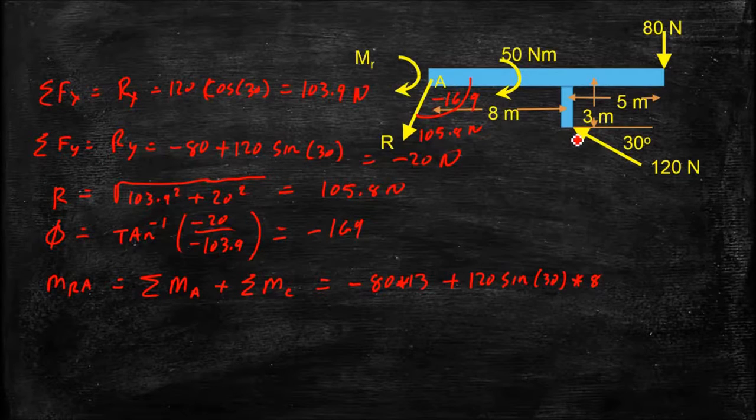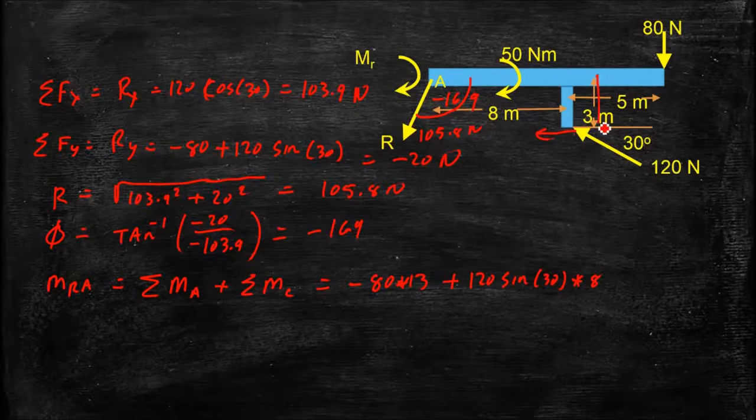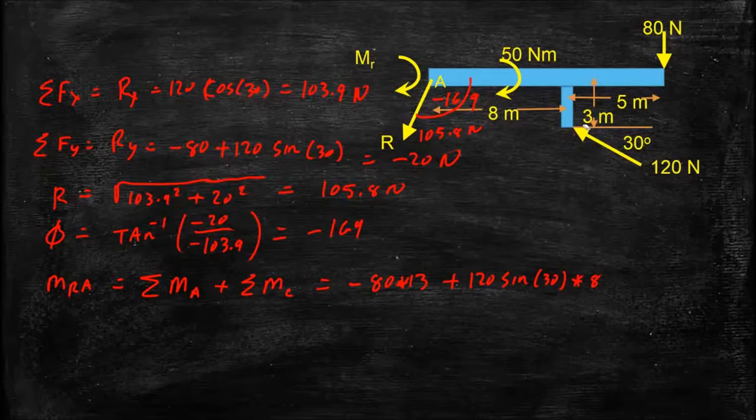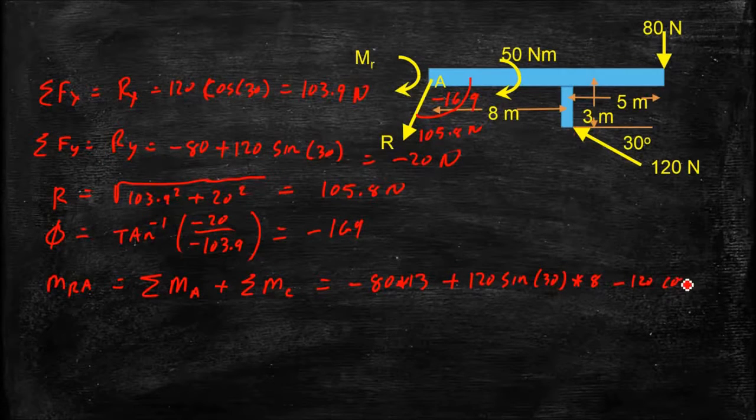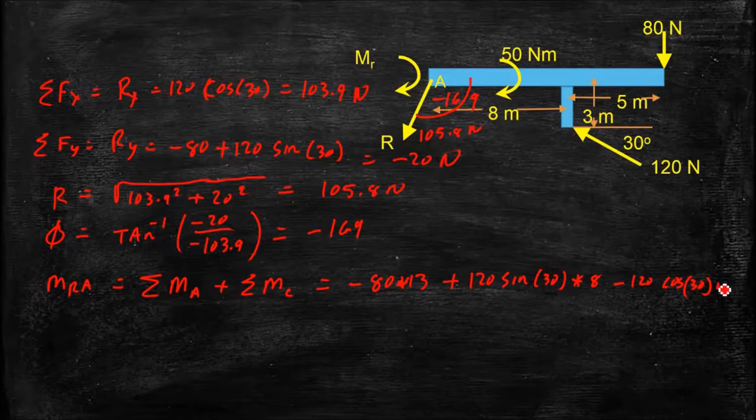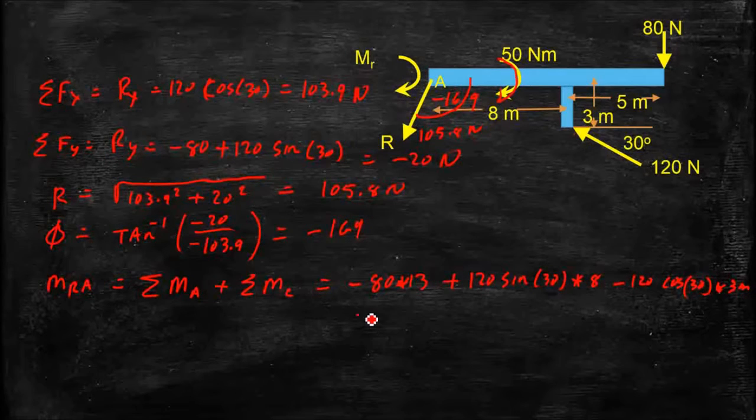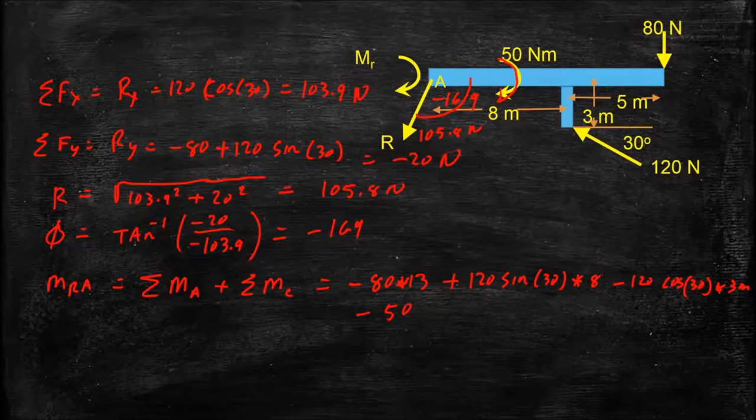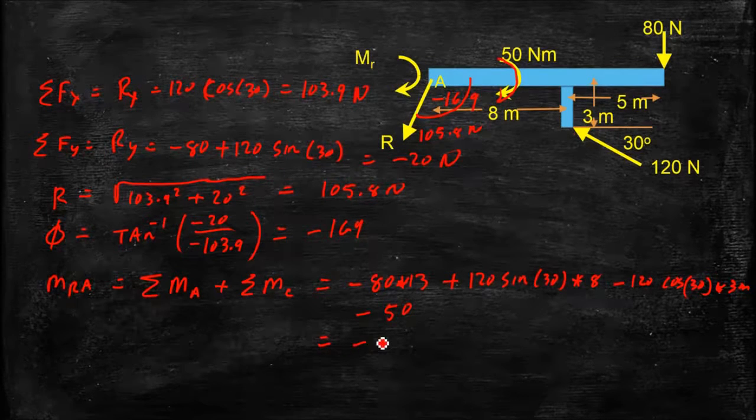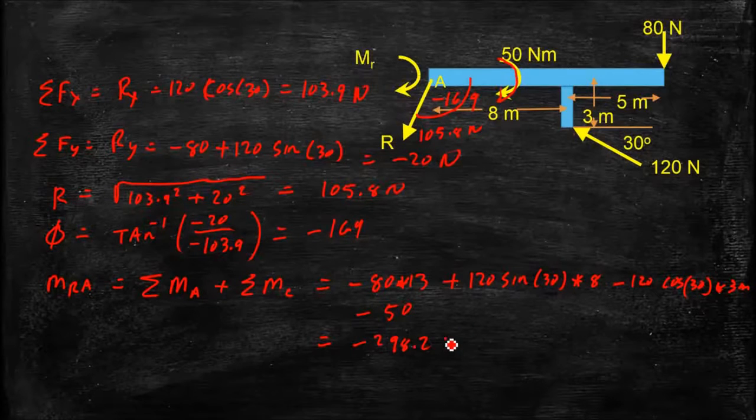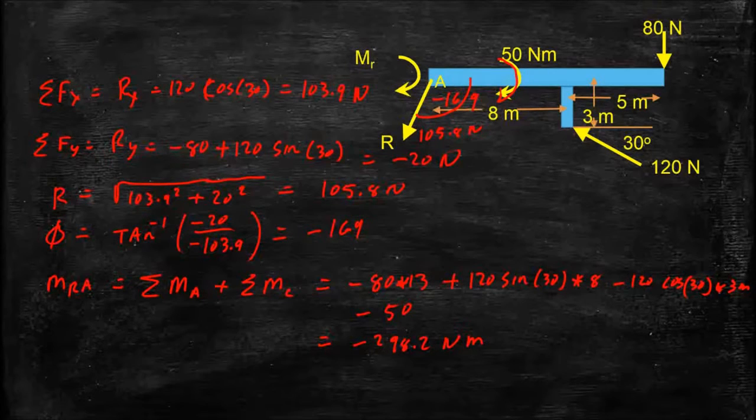And I have the X component of this force, which is at 3 meters down here. So that's going to generate again a clockwise moment, so that will be negative. So negative 120 cosine 30 times 3 meters. And then I have my couple, which is drawn as counterclockwise, so I have minus 50 Newton meters for that couple. And when I put all those together, I come up with a moment of negative 298.2 Newton meters applied at point A. So that takes two forces plus a couple, and brings us down to one force and a couple.